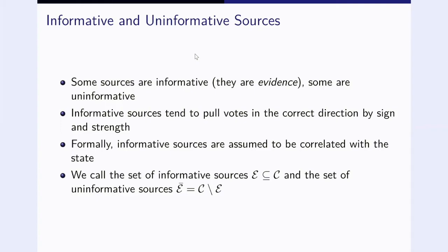There are informative and uninformative sources. The informative sources are evidence, and the informative sources tend to pull the votes in the correct direction, both by sign and by strength. If you want to express this more formally, you could say that the informative sources are assumed to be correlated with the state. There will be some notation, but I'll try to always tie it back to the substance as much as I can. We call the set of informative sources curly E, which is a subset of curly C. The set of uninformative sources we call E-bar, so the complement.